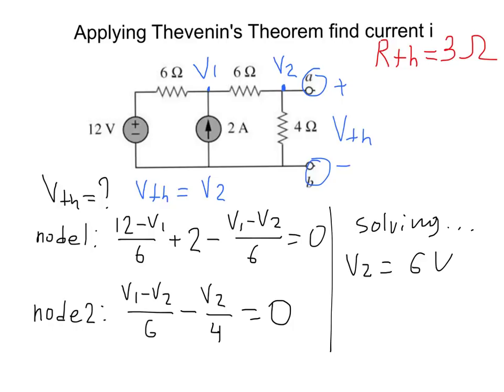When solving these two equations, we don't need to worry about V1 since it's not part of the question — we only need the value of V2. And that means V Thevenin equals V2, which is 6 volts. So we have now found both Thevenin resistance (3 ohms) and Thevenin voltage (6 volts).